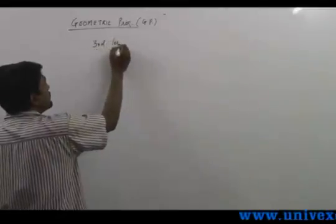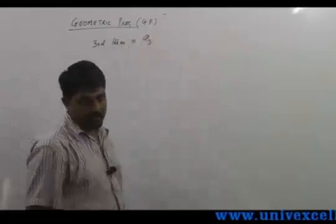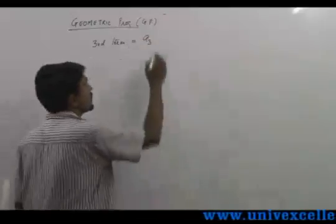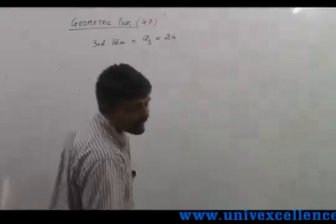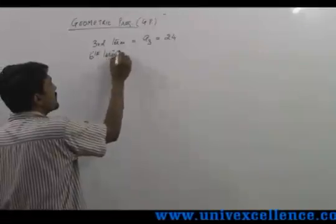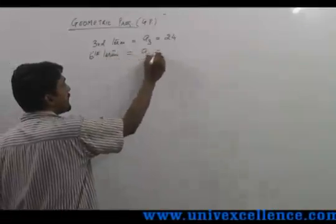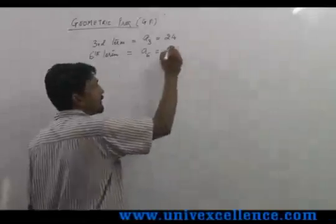The third term we write as a3, which is 24. The sixth term we write as a6, and it equals 192. These values are given.